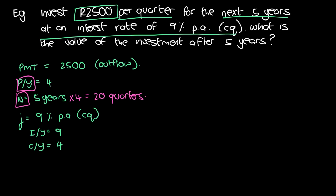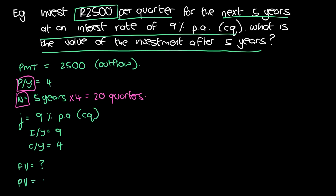The question asks for the value of the investment after five years, so we want to find the future value — FV is unknown. We started by investing per quarter, so we know that our PV in this situation is equal to zero.